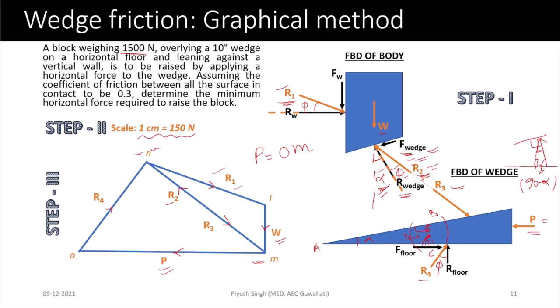When solved analytically, the value comes out to approximately 1417 to 1449 Newton, so the graphical solution should give around 1420 Newton. Solve it graphically and compare the two results. Check your measurements carefully if your graphical result differs significantly.